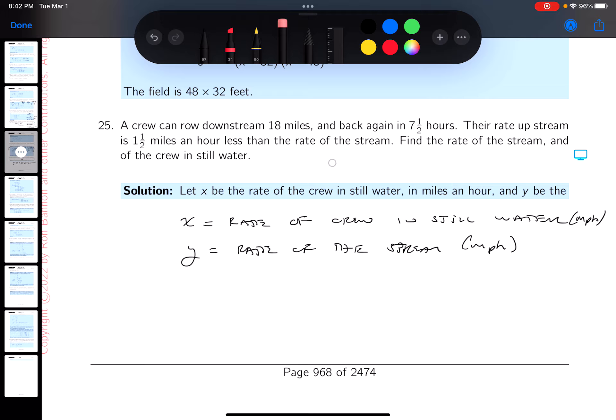This is a distance equals rate times time problem. So again, X is the rate of the crew in still water in miles per hour, and Y is the rate of the stream in miles per hour.